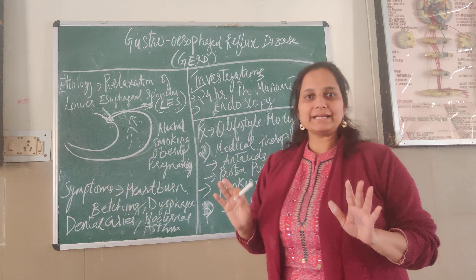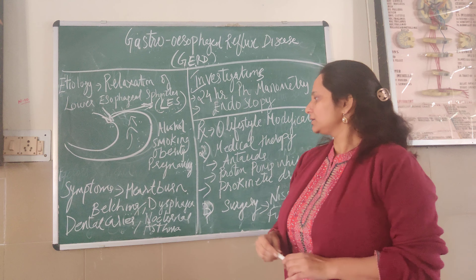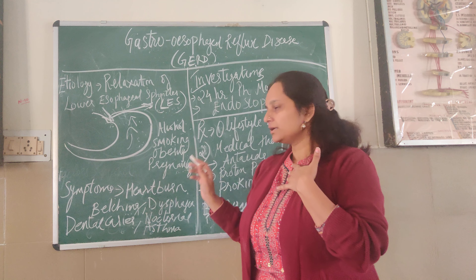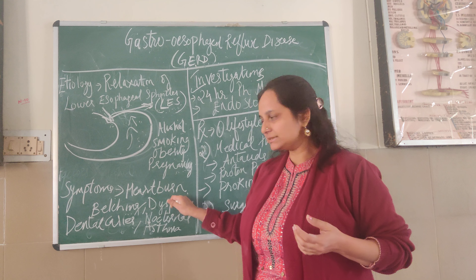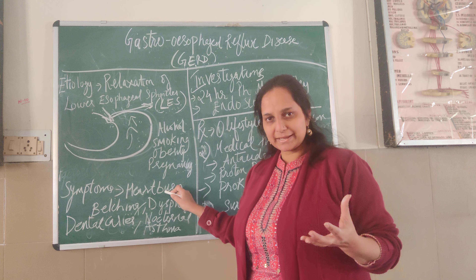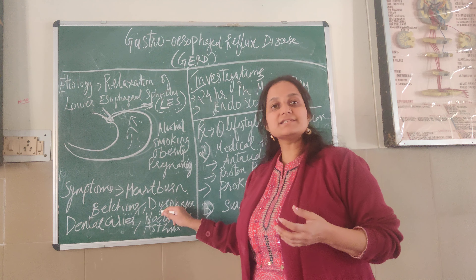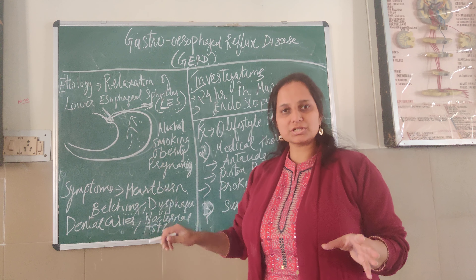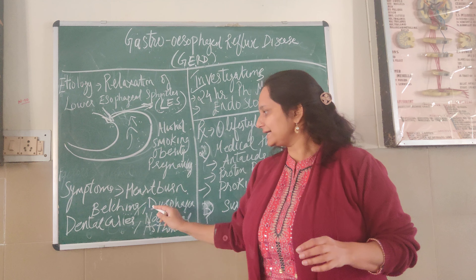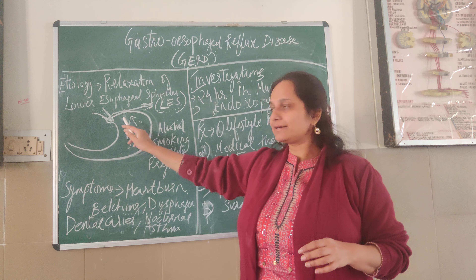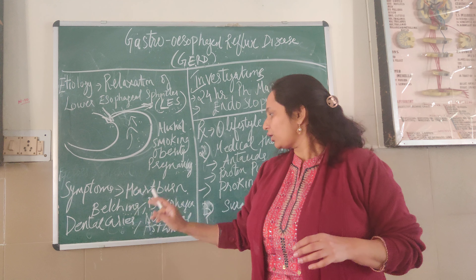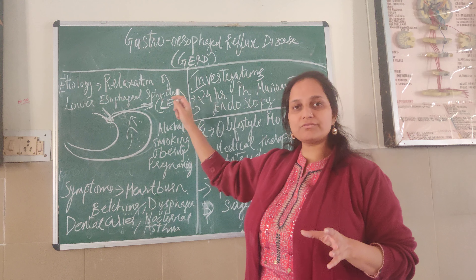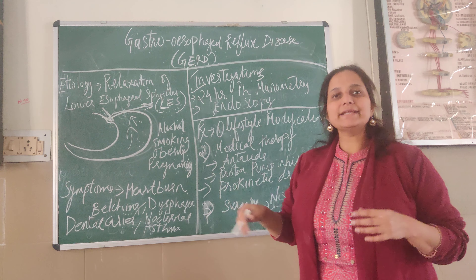Now the symptoms — there are typical and atypical symptoms. When a patient comes, in their own words they describe heartburn and belching after eating food. Heartburn is also known as retrosternal chest pain. Belching is another typical complaint, and there is also dysphagia — difficulty in swallowing. These are the typical symptoms; if any patient presents with heartburn and belching, you can easily diagnose GERD. Atypical symptoms include dental caries due to acid reflux, nocturnal asthma due to irritation from backflow of acid, and odynophagia.